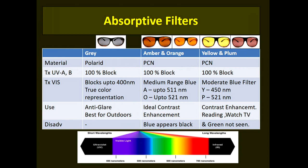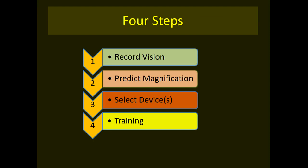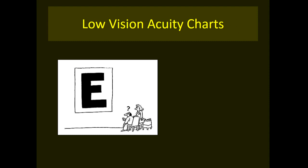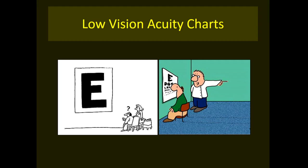There are four important steps in prescribing low vision aids in clinical practice: first, recording vision; second, predicting magnification; third, selecting and dispensing a device; and fourth, training the client in using the device. Various testing kits are available — in our clinic we use the Keeler 1H1 set for distance and 1K1 set for near, but they are expensive. Beginners can use whatever material is available in the clinic. Recording vision for low vision patients is a daunting task because using normal Snellen optotypes would require impractically huge charts. The solution is to use special low vision charts or a smaller testing distance.